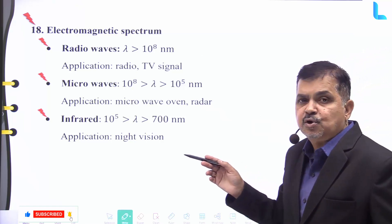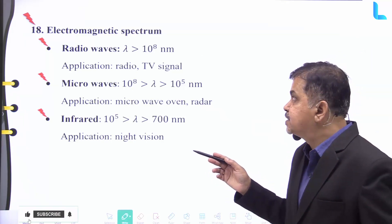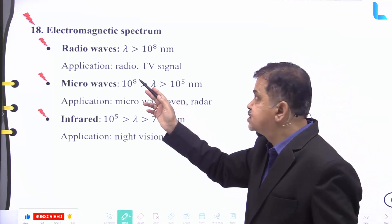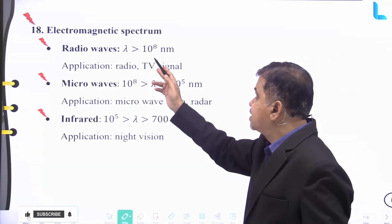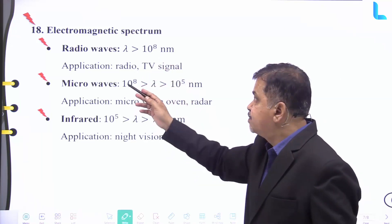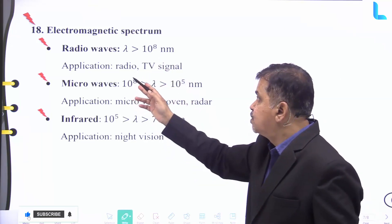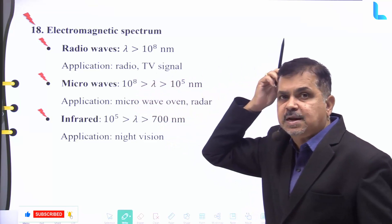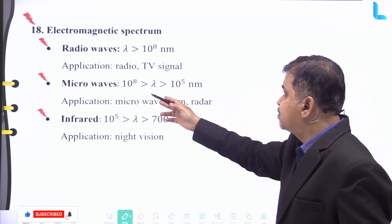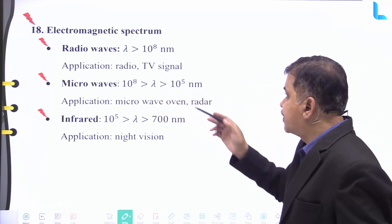Further, the electromagnetic spectrum can be understood as like this. For the radio waves, the spectrum ranges between λ greater than 10 to the power of 8 nanometers, and its application is among the radio and TV signals. And for microwave, the spectrum lies between 10⁸ and 10⁵ nanometers and has its application in microwave ovens and radar.